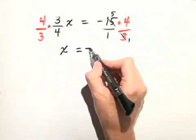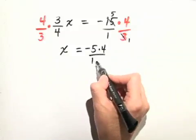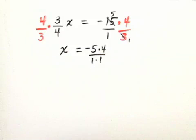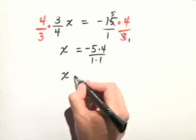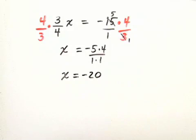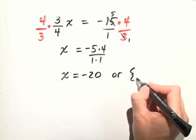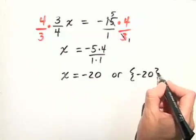So we have negative 5 times 4 in the numerator over 1 times 1 in the denominator. Well this simplifies to x equals negative 20 over 1, or simply negative 20. So we can write the solution set as negative 20.